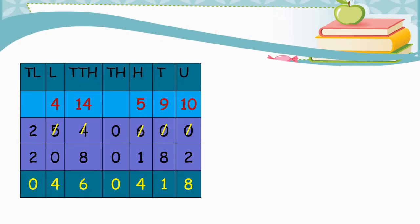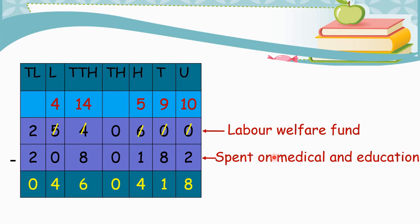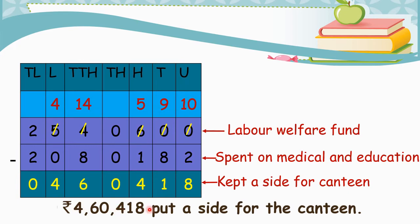We know that 25,40,600 is the amount in the labor welfare fund and 20,80,182 is the total amount spent on medical and education. Let us subtract the total amount spent on medical and education from the amount in the labor welfare fund to get the answer. So, Rs. 4,60,418 was put aside for the canteen.